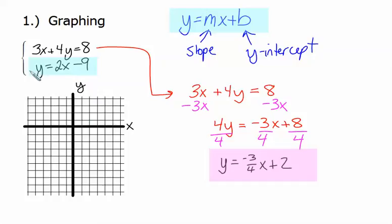Now let's start with our equation in blue. So the y-intercept is negative 9, which means we start down 9: 1, 2, 3, 4, 5, 6, 7, 8, 9. Look at that, I plotted that pretty well.